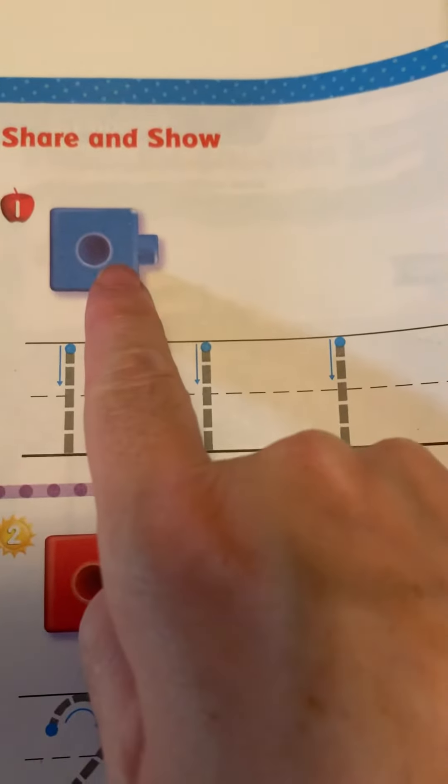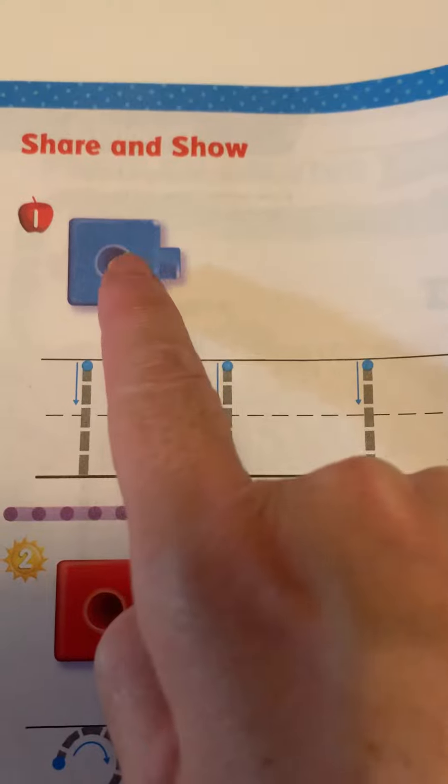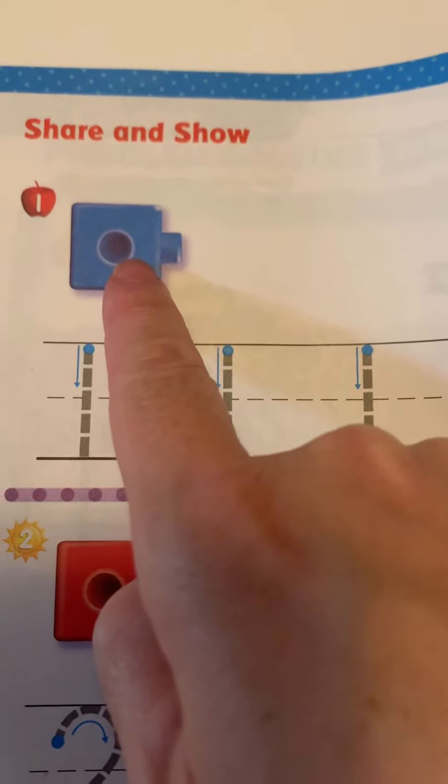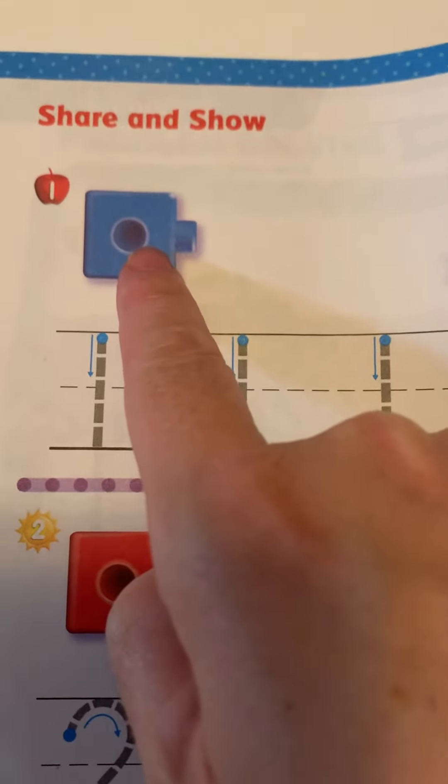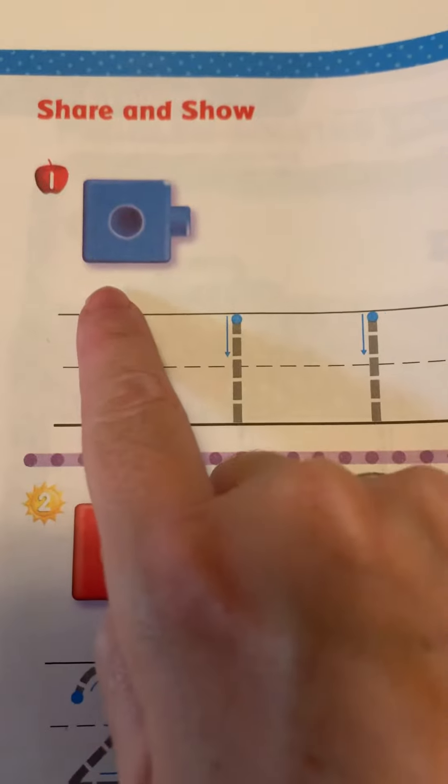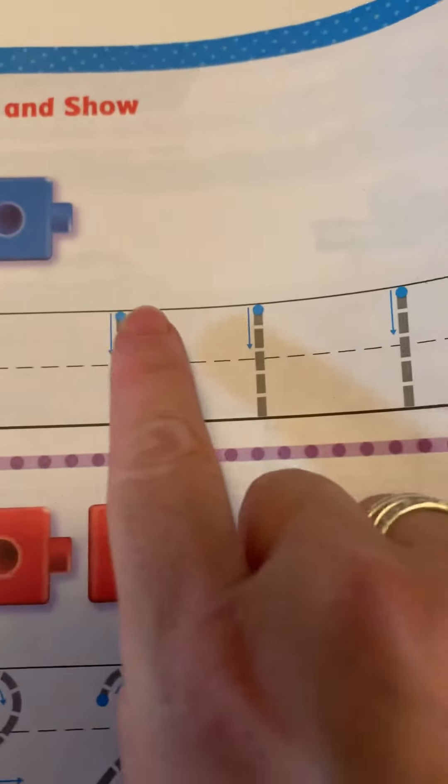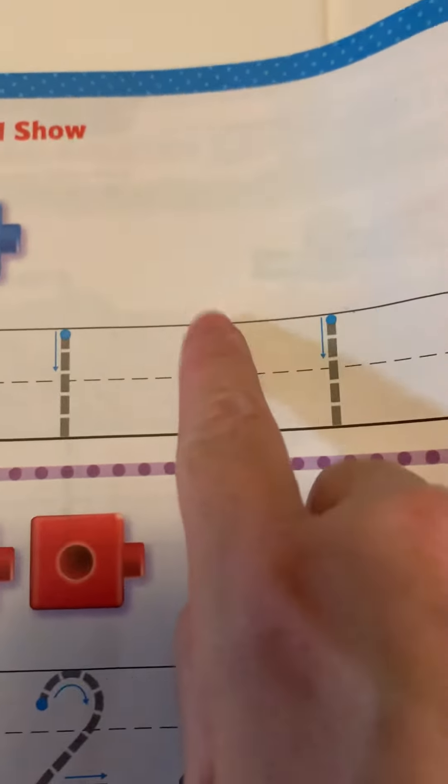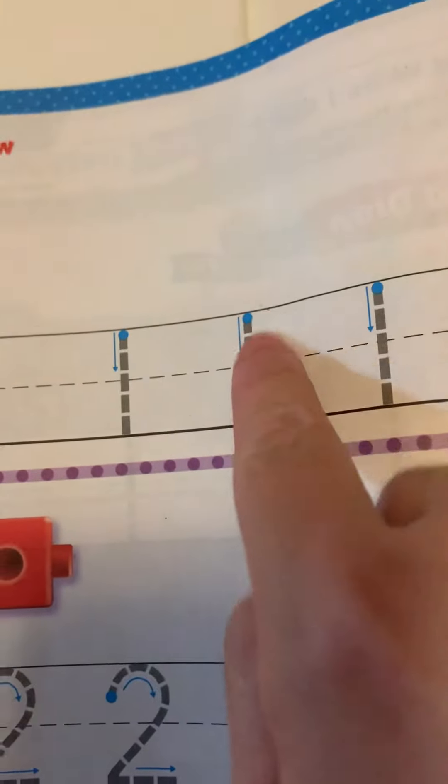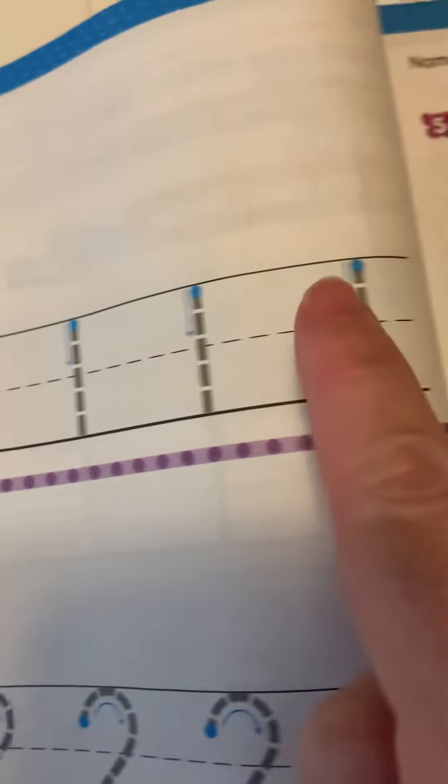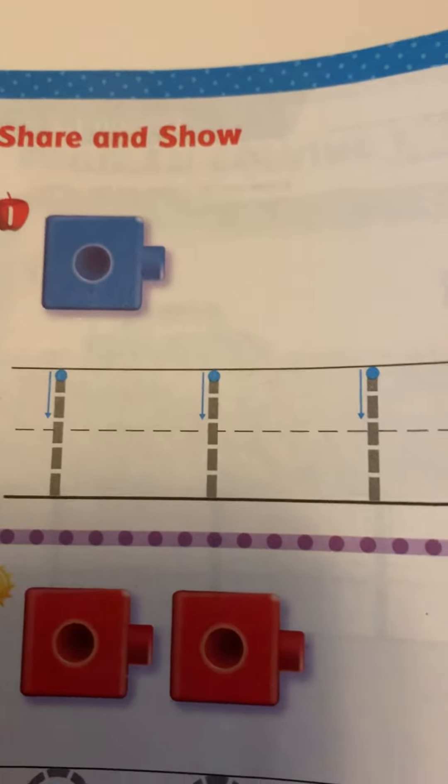Okay, so let's count the cubes. There are one cubes. So we are going to trace the number one with our finger. Start at the top, go down to the bottom. One. Now I want you to go back and trace the number one with your pencil.